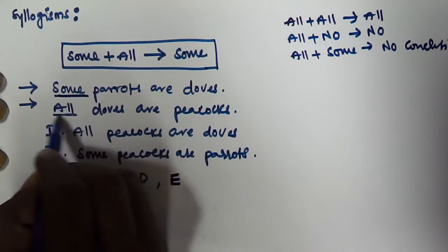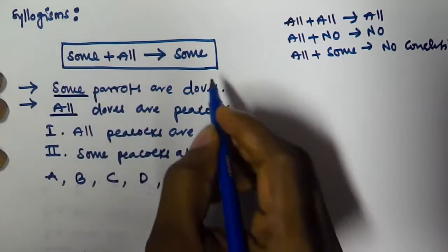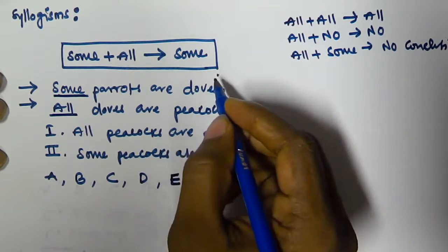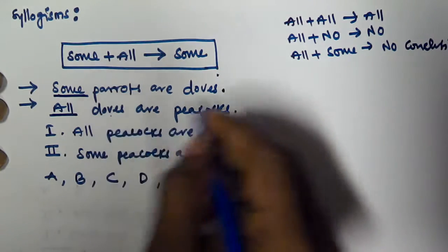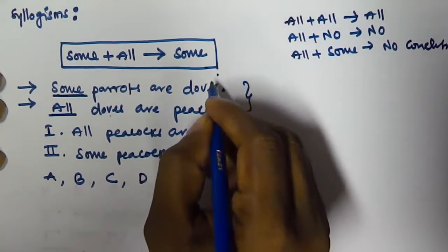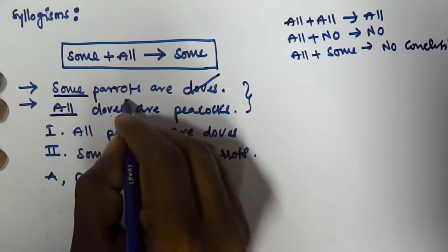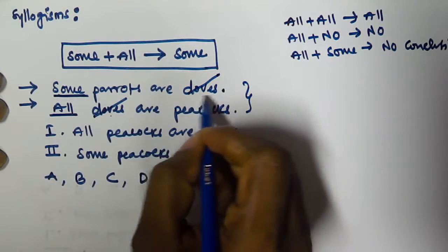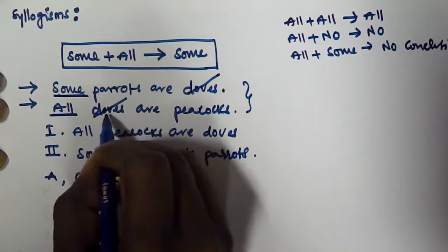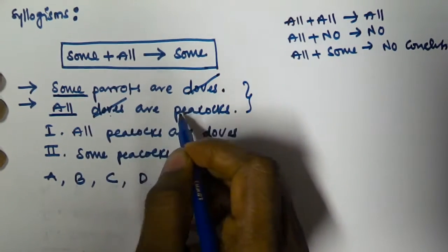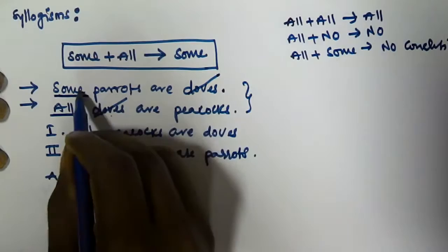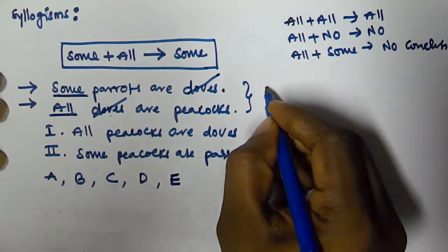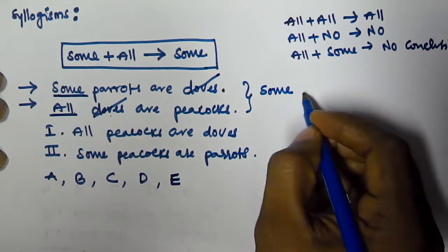If you observe the two given syllogisms, the first one starts with 'some' and the second one starts with 'all.' The predicate of the first syllogism is equal to the subject of the second syllogism. We cancel these two equal terms, and according to the rule, some plus all gives some.